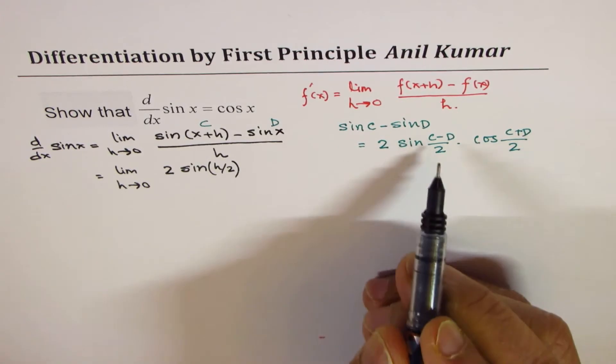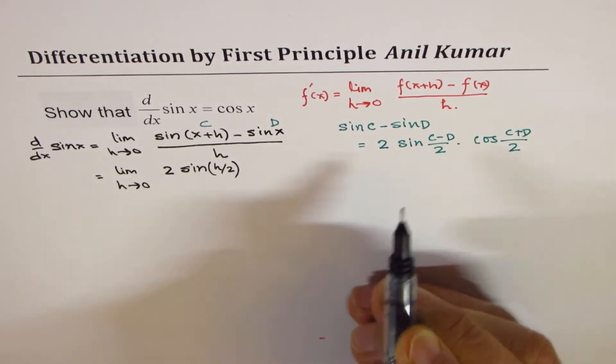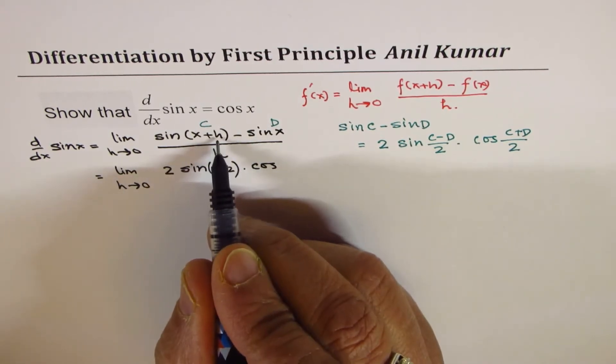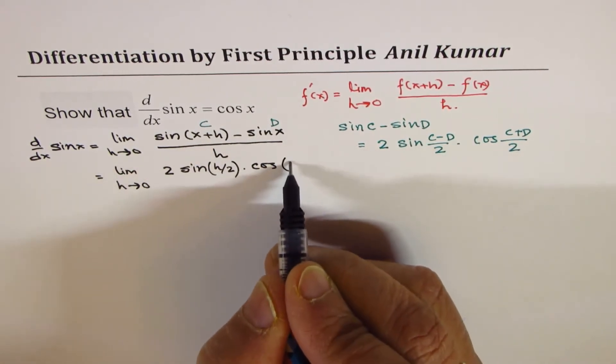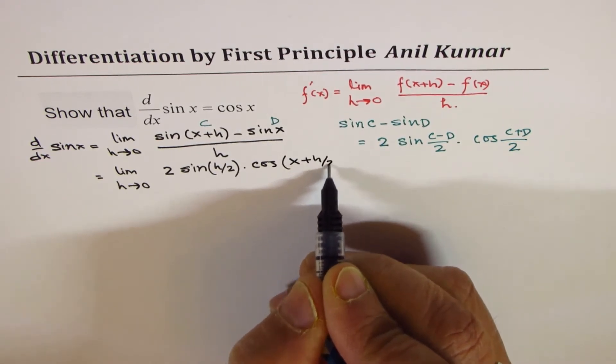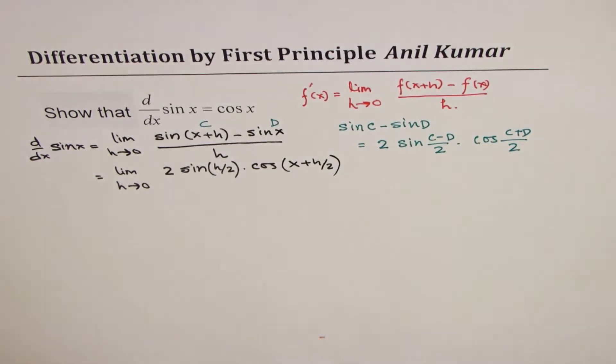That is how we get c minus d by 2 times cos of, when you add them, you get 2x plus h. So you get 2x divided by 2 is just x, plus h by 2. That is how you get it.